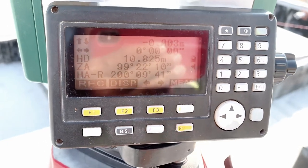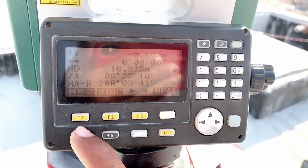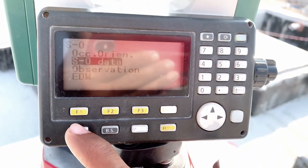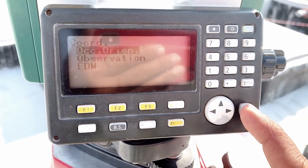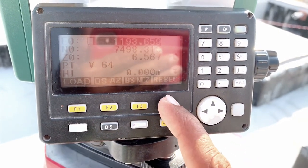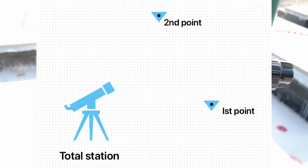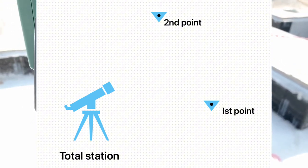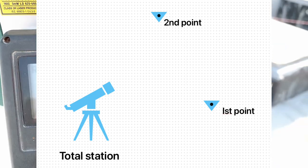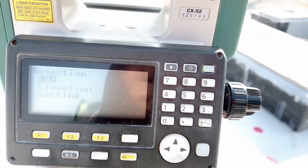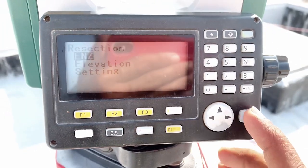This one shows a 3mm difference — no problem. This is the backsight from two points. Now we also check the other method: Orientation, Occupied Orientation, and Resection. For resection you must need at least two points, and you can also use up to ten points. More points give you more accuracy for the backsight.